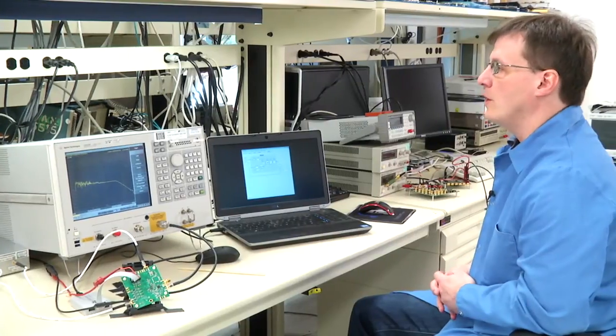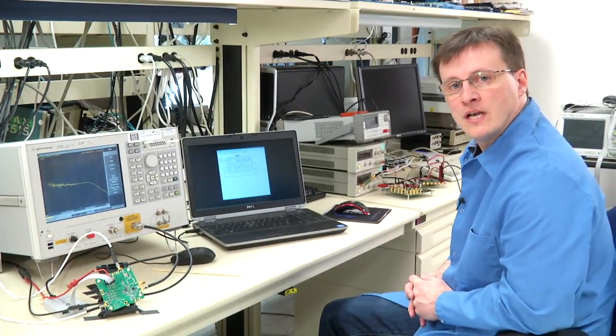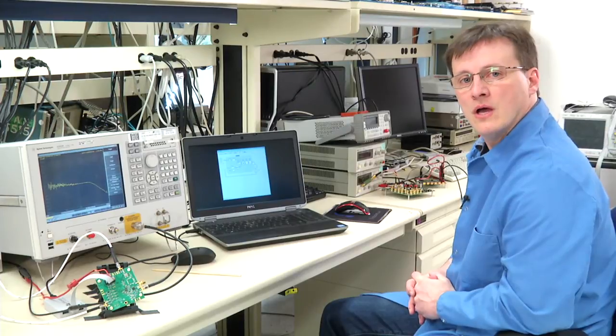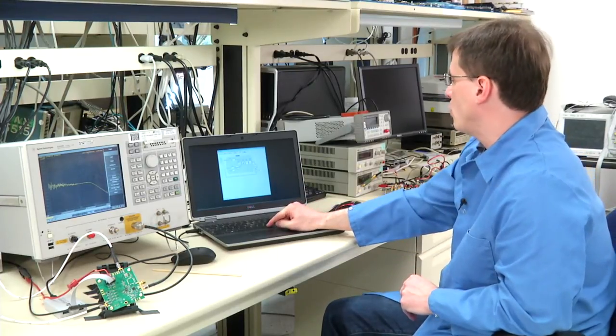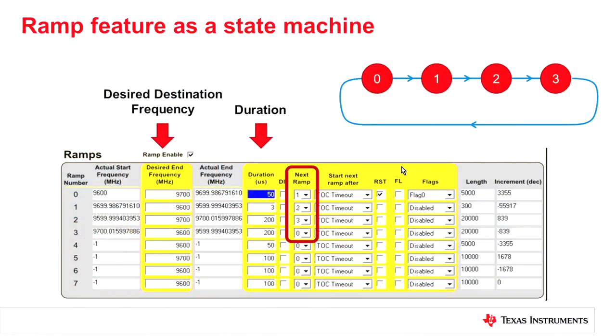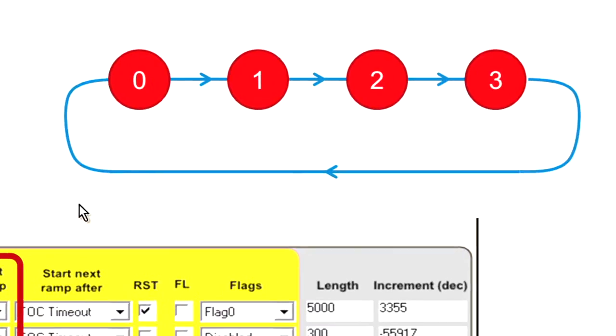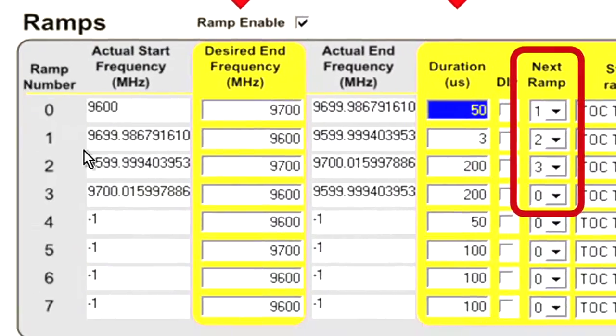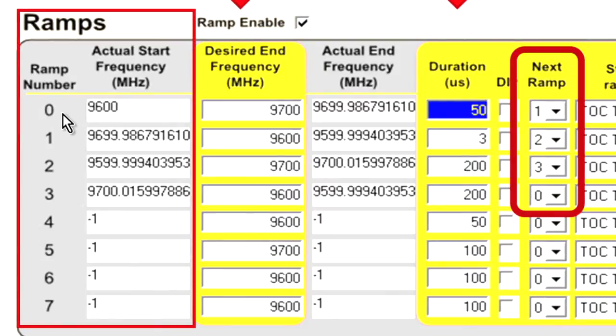Now I'm going to move to the very nice feature of frequency modulation or ramping. The frequency ramping on this software is done through a table. Literally, it is a state machine. On this slide, I show an example of a 4 state, 0 to 3. The software has a table, and since the part can do up to 8 different ramps, the table has 8 rows. Each row corresponds to a state.